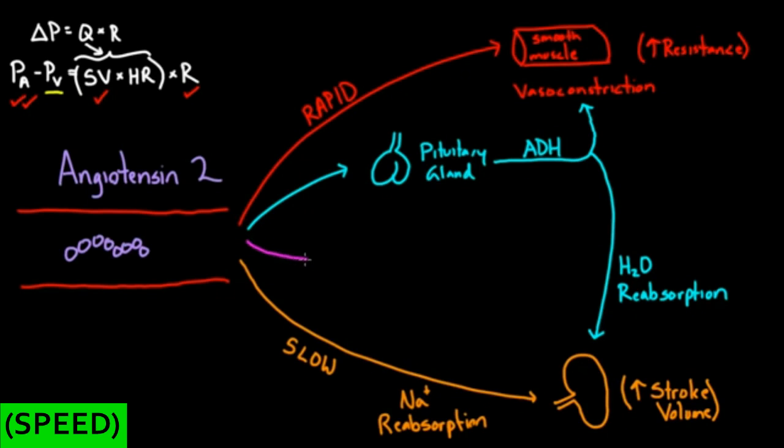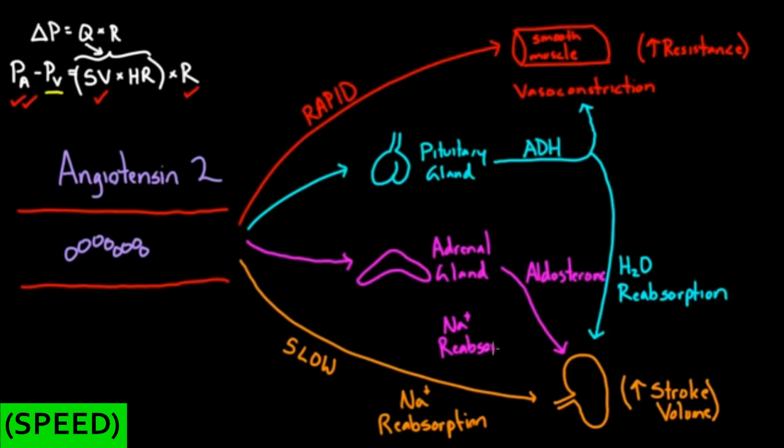But before I get to that, the last target organ I want to mention is another gland called the adrenal gland. And the adrenal gland is literally sitting on top of the kidneys, and that's why it's called adrenal. And the adrenal gland is going to send off its own hormone called aldosterone. And aldosterone is going to affect the kidneys. And just like the angiotensin 2, aldosterone is going to cause salt reabsorption. And that's the main thing that it does. And this salt reabsorption is going to lead to more water reabsorption and increase in stroke volume. So you can see how increase in resistance and increase in stroke volume is how our body is going to get our blood pressure back in control.